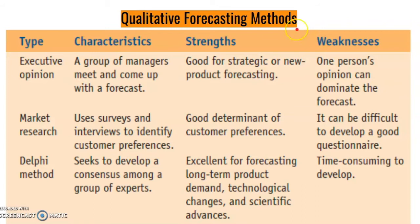There are many types of qualitative forecasting methods. Some are informal and some are structured. Regardless of how structured the process is, we should remember that these models are based on subjective opinion and are not mathematical in nature. Some common qualitative methods are described in this table. First, we have the executive opinion.